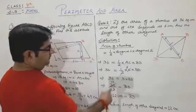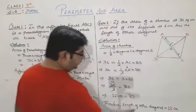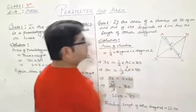Now 3 is transposed to this side and 36 divided by 3 equals BD. We get 12, so BD equals 12 centimeters. The length of the other diagonal is 12 centimeters.